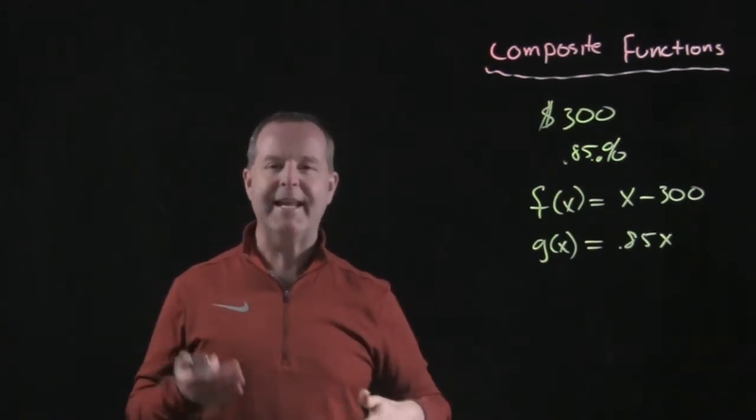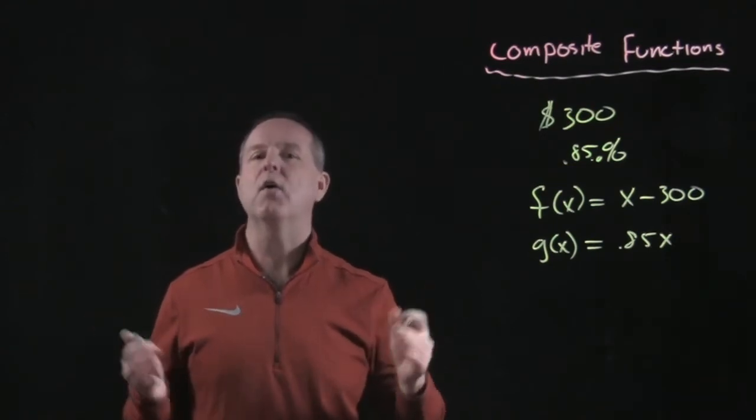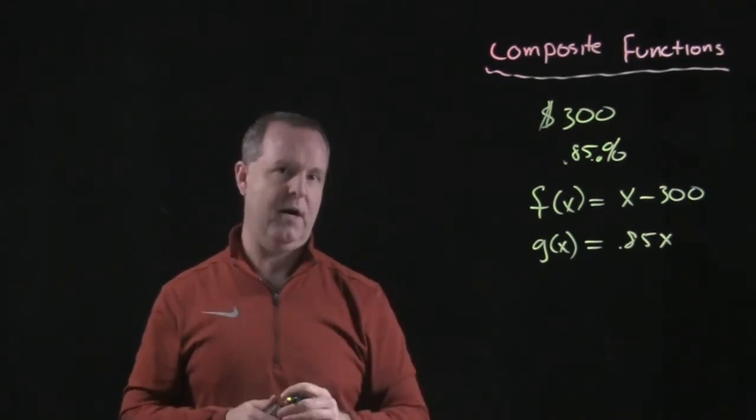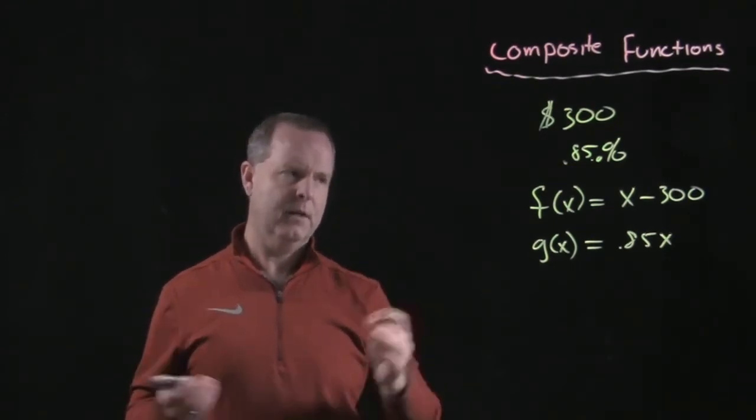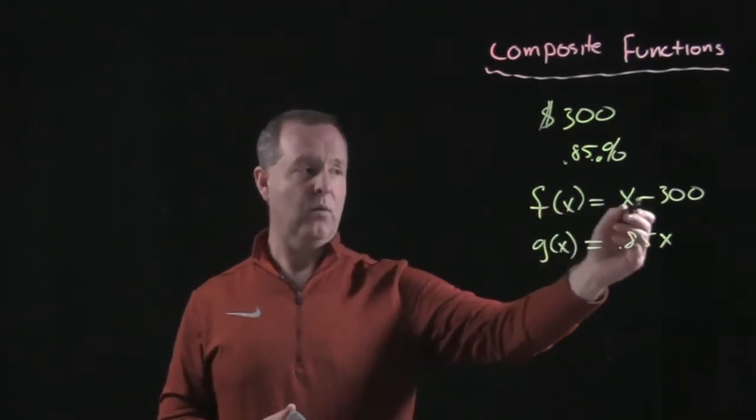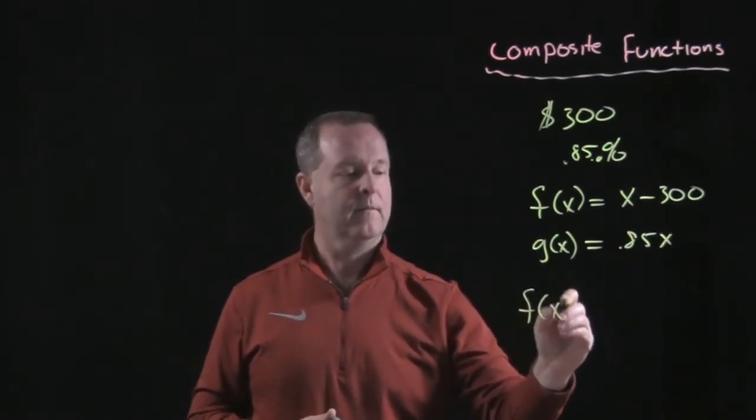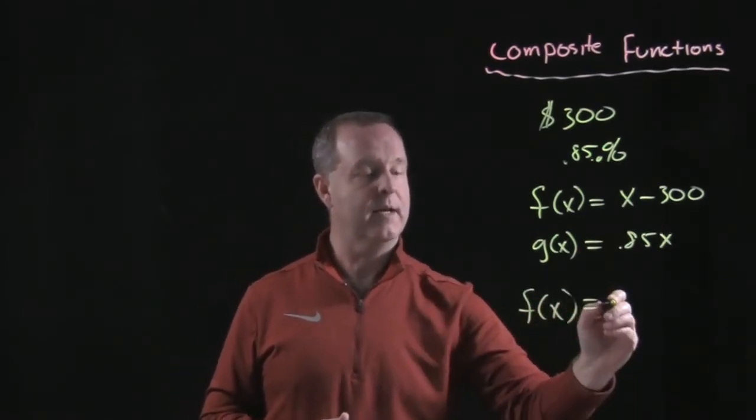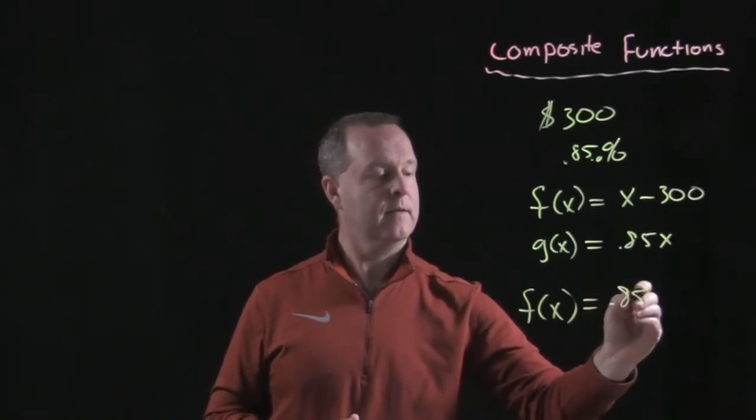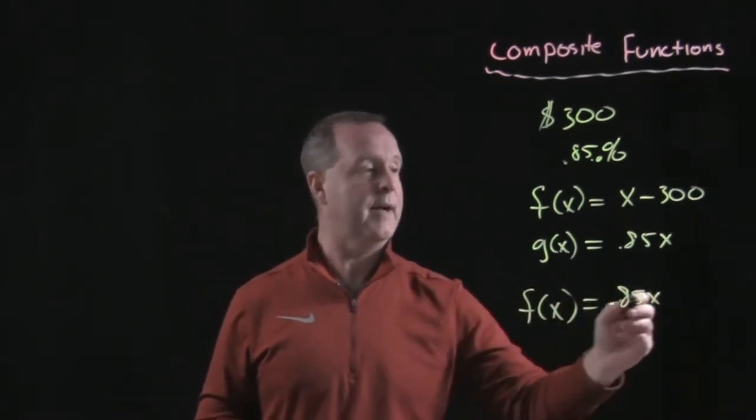Now imagine that I get in there and I start to haggle with the salesman and I finally get him to say, alright fine, I'll give you both discounts off at the same time. So what does that look like? Well, that would take my regular function that I have and this would become 85% of x or .85 of x minus 300.